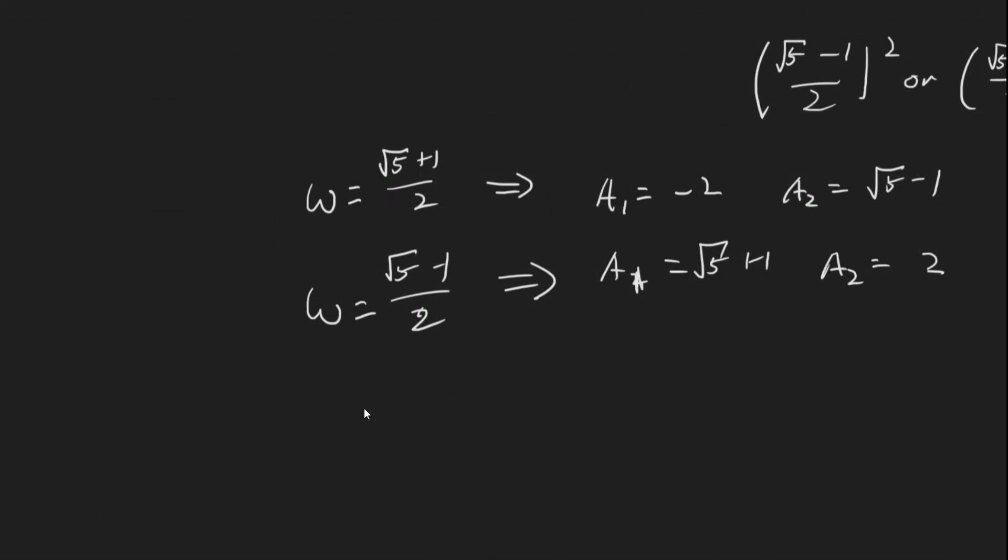And so this gives us that our normal modes, our x1, x2, is equal to the two values of a1, a2, times cosine the two values of omega t plus some phase constant. And those are our normal modes, and that's going to be it for this pretty short video. Thanks for watching.